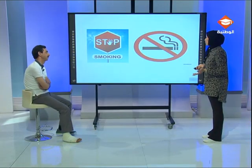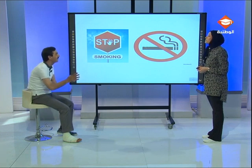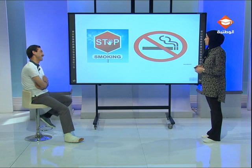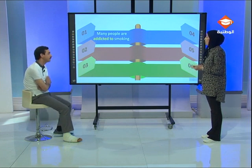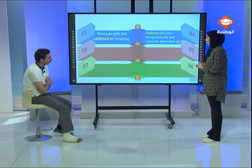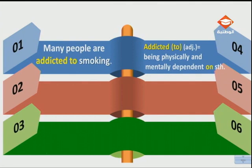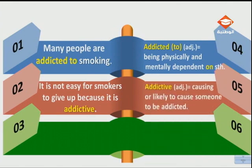Please listen carefully and try to follow his advice — it's very important. Stop smoking. We can make it more polite: 'Thanks for not smoking.' Many people are addicted to smoking, that's why it is not easy for them to stop or give up. When you are addicted to something, you are physically and mentally dependent on it. Smoking is addictive — the components in the cigarettes are addictive, so it's not easy to give up. 'Addictive' means causing or likely to cause someone to become addicted.